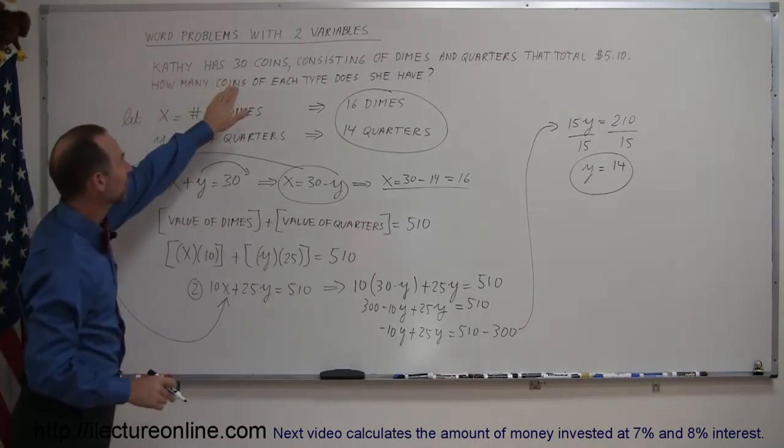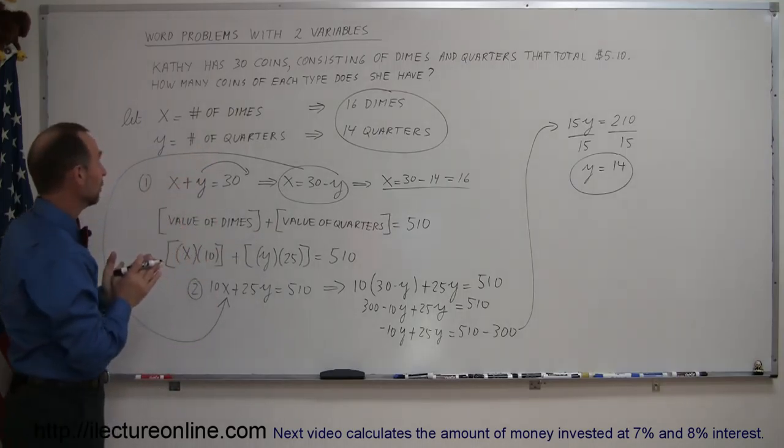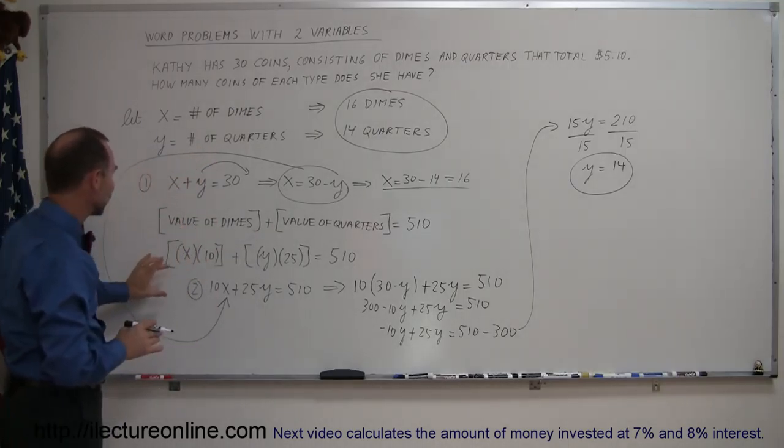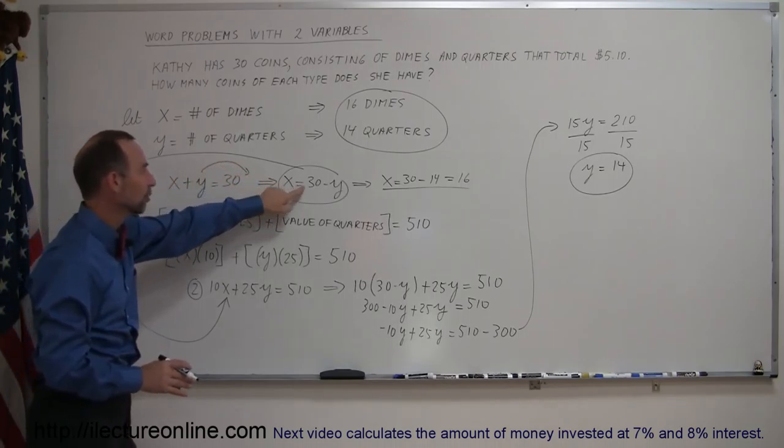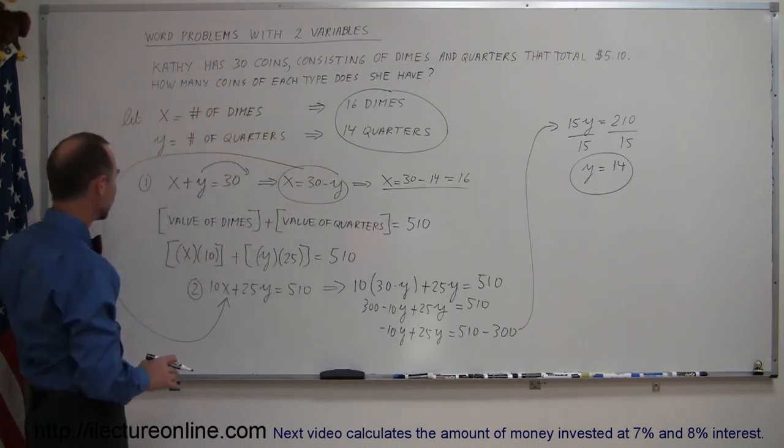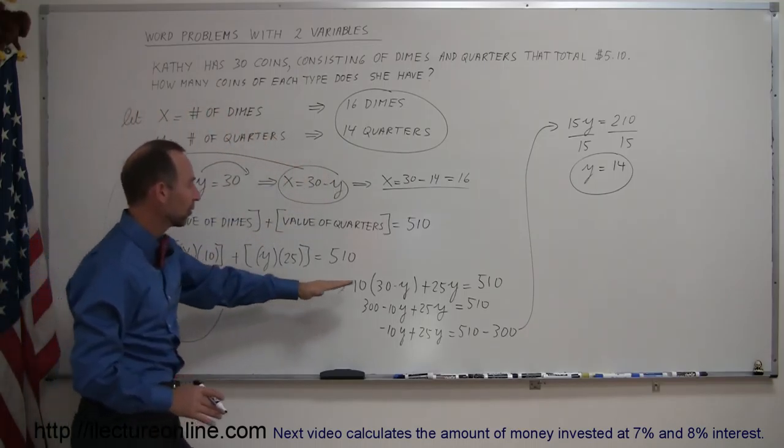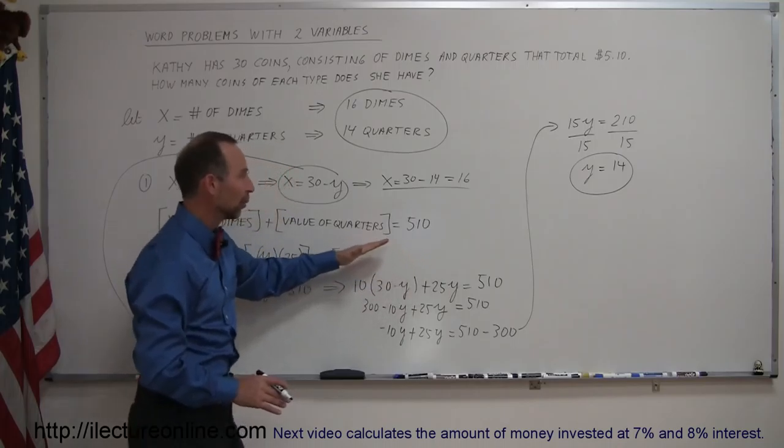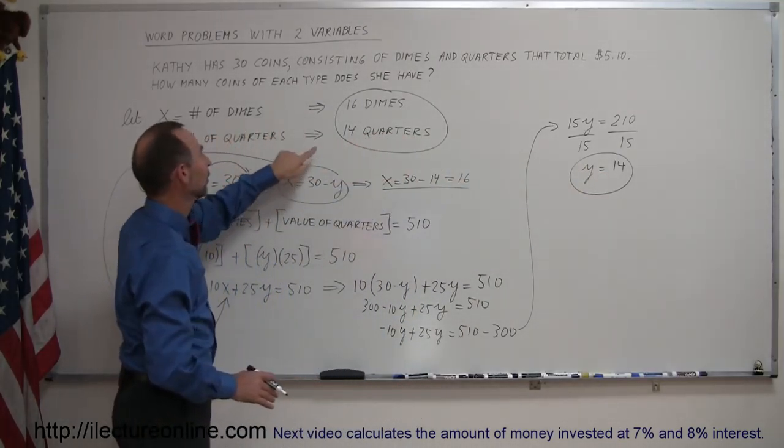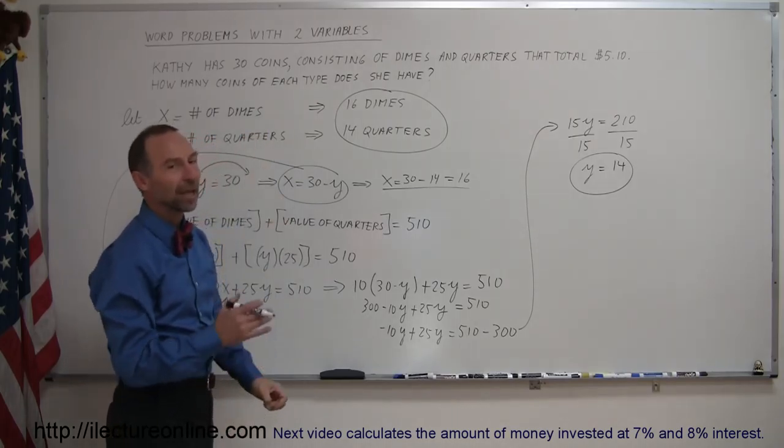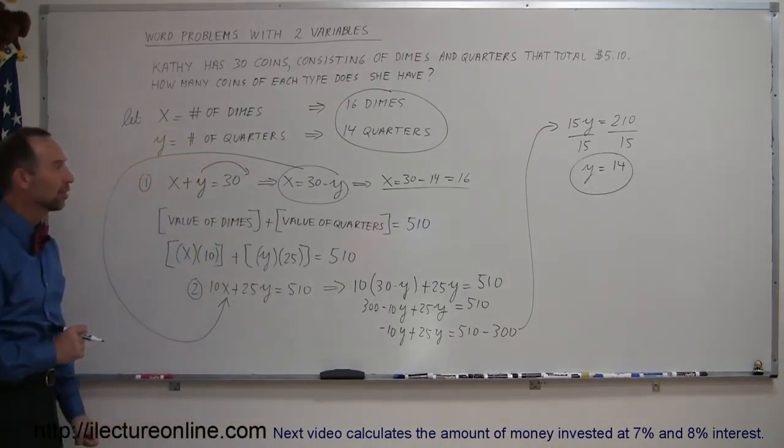Then we go into the problem and find out the relationship between them to come up with two equations. We solve the two equations simultaneously by taking one of the two equations, solving for one of the variables in terms of the other, we substitute that into the second equation. That allows us an equation with just one variable, we solve that for the one variable, then we plug that value back into here to solve for the other variable. And that's how you do a problem like that using two variables.